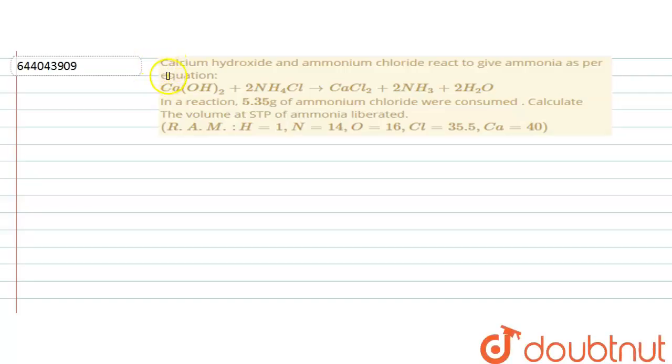The question says calcium hydroxide and ammonium chloride react to give ammonia as per equation: Ca(OH)2 plus 2NH4Cl giving rise to CaCl2 plus 2 moles of ammonia plus 2 moles of water.